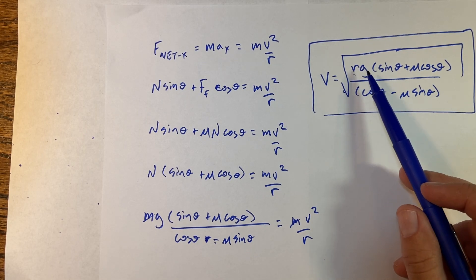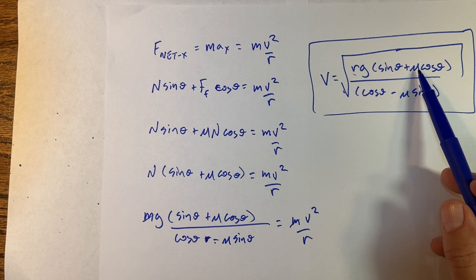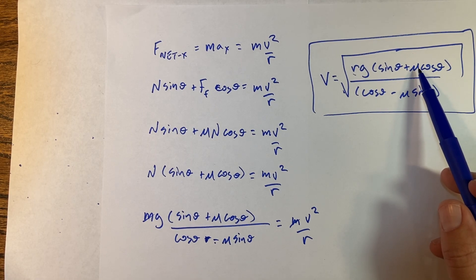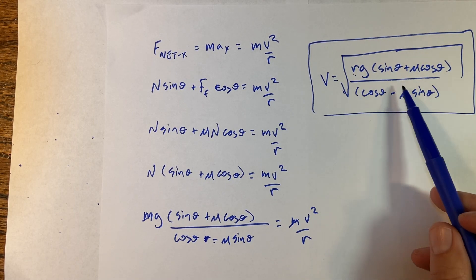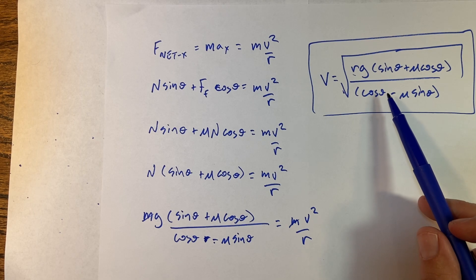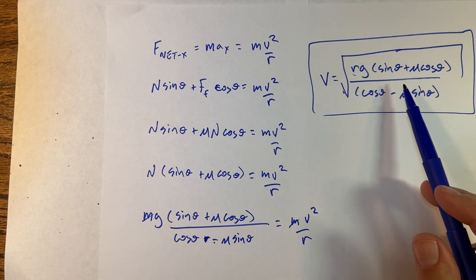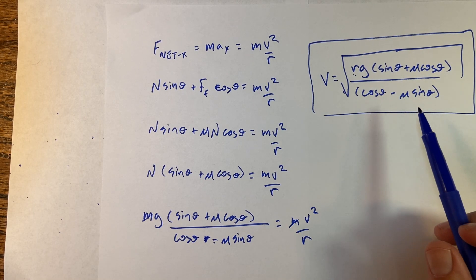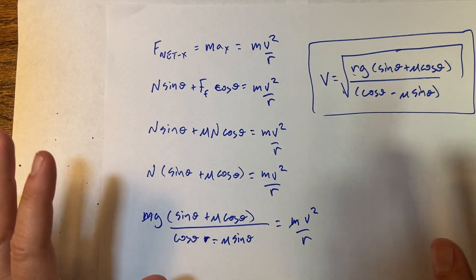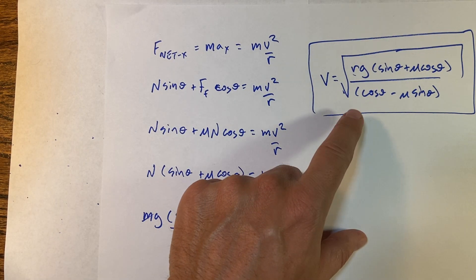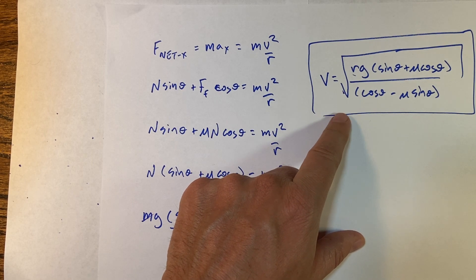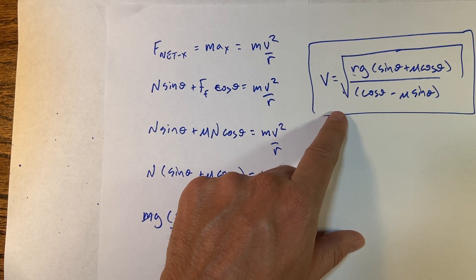As I increase the radius I should be able to go faster — found that before, and that's true here. What if I increase the coefficient of friction? I should be able to go faster. It's not completely obvious, but increasing mu increases the numerator term and decreases the denominator, so it does suggest that. I'm going to graph all this, change all the parameters, and make a Python program in the next video.